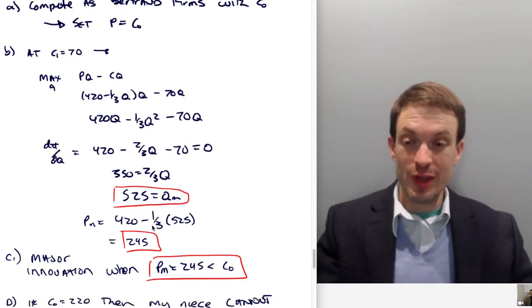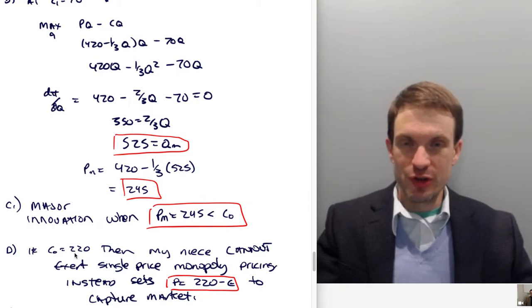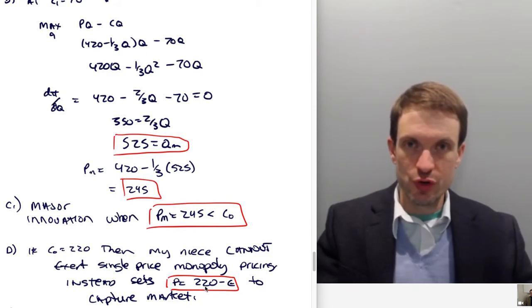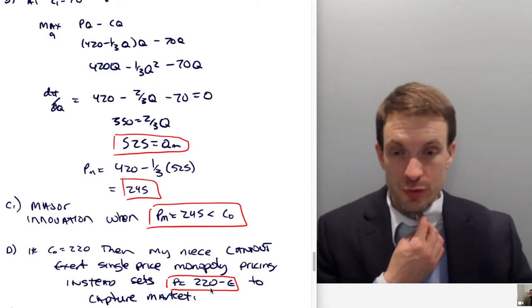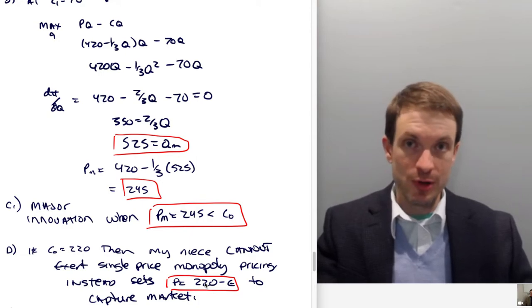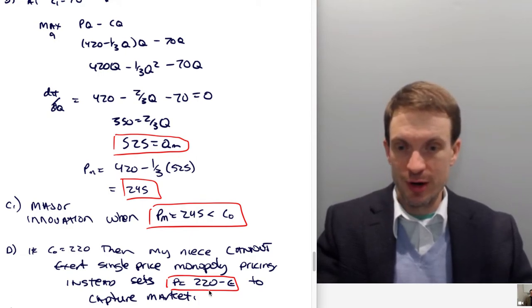In Part D, suppose C₀ was initially 220. Then my niece cannot actually exert single price monopoly pricing if her costs are 70, because 245 is bigger than 220. So what does she do? She would set price equal to 220 minus epsilon to capture the market. She'd be a monopolist without standard monopoly profits, but would still capture the market as the only one serving it, with positive economic profits.